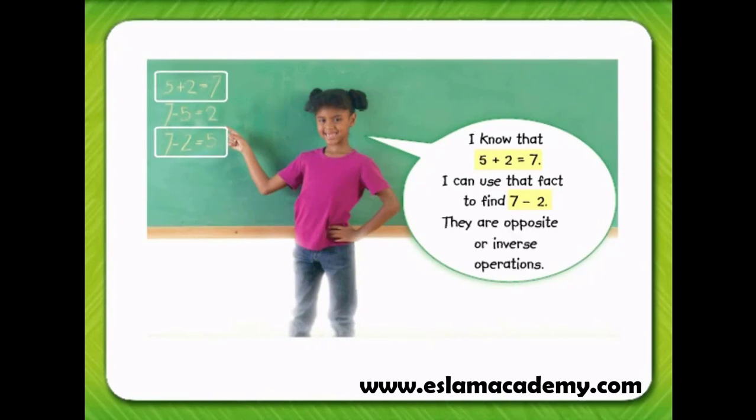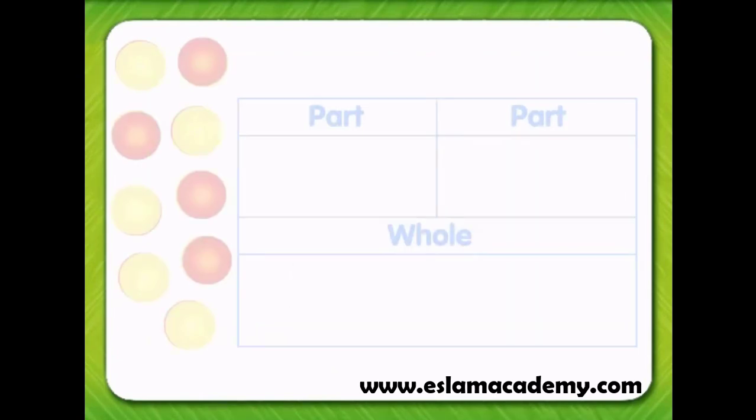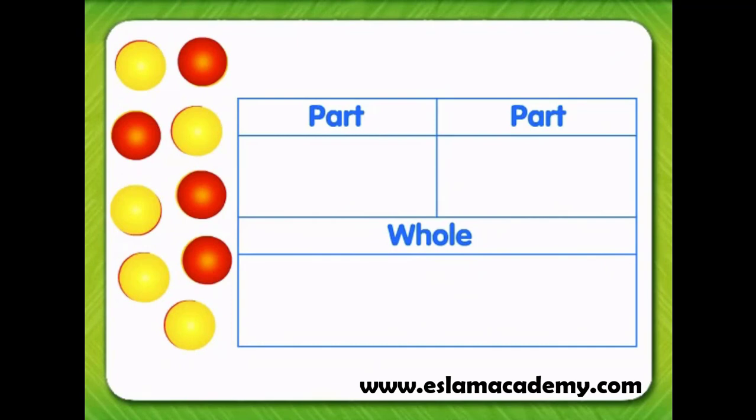We can try one ourselves. First, identify the addition fact. Next, use the work mat and red and yellow counters to find a related subtraction fact. Then write both facts.